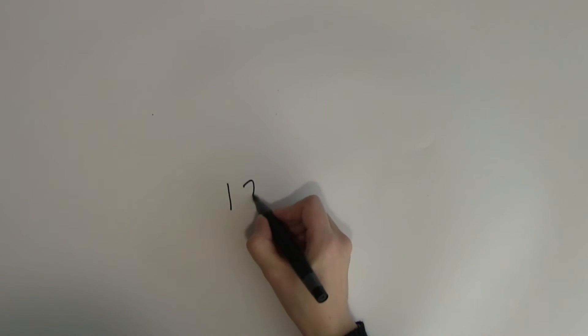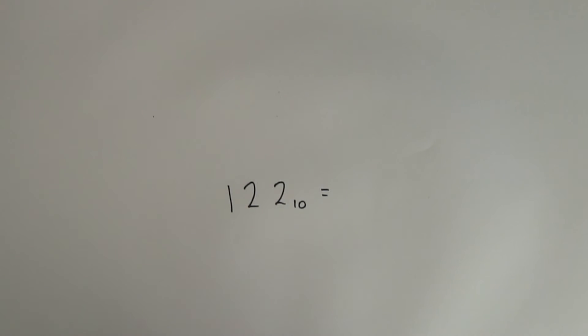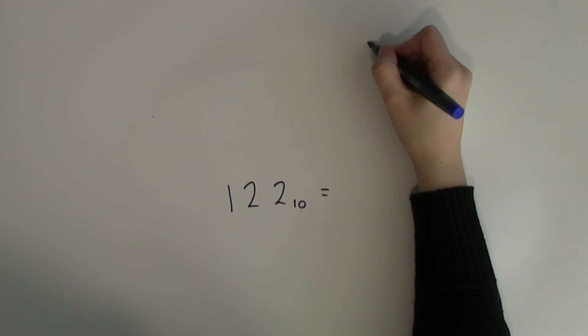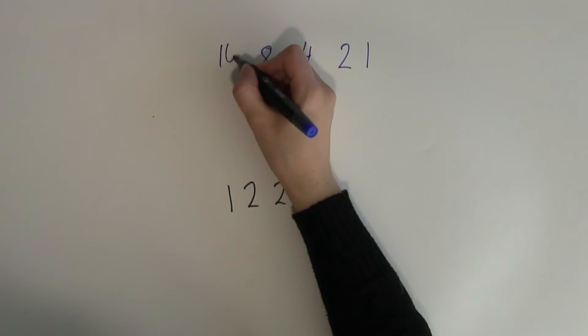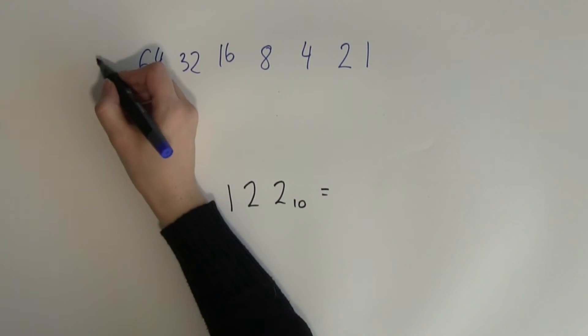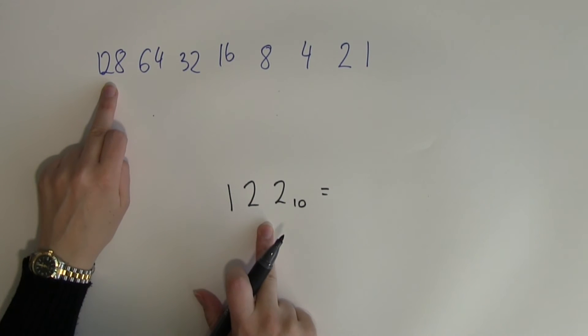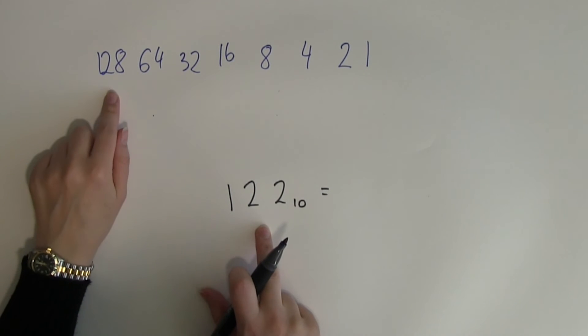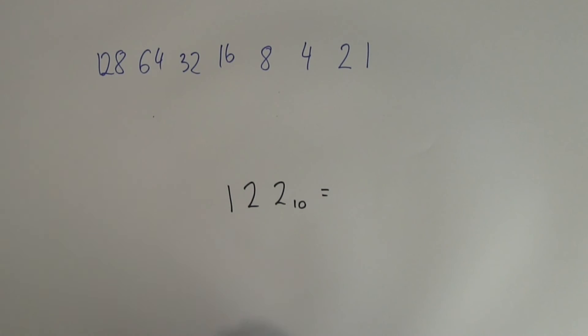Next example, 122 in decimal. What does it look like in binary? Again, start with the place values. 1, 2, 4, 8, 16, 32, 64, 128. Now, 128 is just slightly too big, but this means that it's still not a place value that I'm going to use. The biggest place value I can use to build up 122 is 64 again.